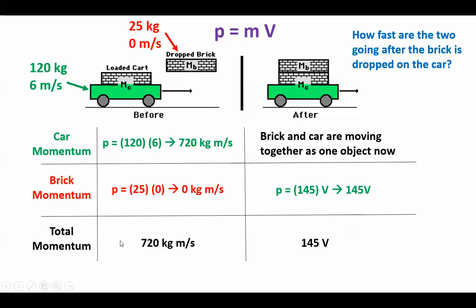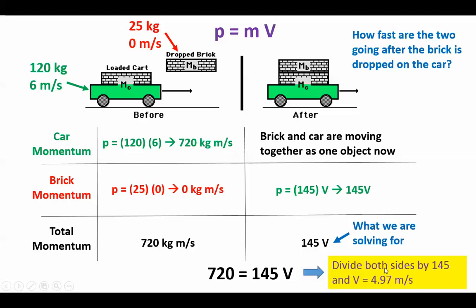So now here, check this out. We've got the total momentum before is 720. We just figured out the total momentum after is this 145V. But remember, we know that these two things have to be equal. So if we set 720 equal to 145V, we can solve this V part. That's what we're trying to solve for. So 720 equals 145V. Now some algebra kicks in. In order to solve for V, we have to divide both sides by this 145 in order to get V by itself. Since they're multiplied together, we have to divide to get rid of it. So if you divide both sides by 145, you'll punch that into your calculator and you find out that the car is moving at 4.97 meters per second.